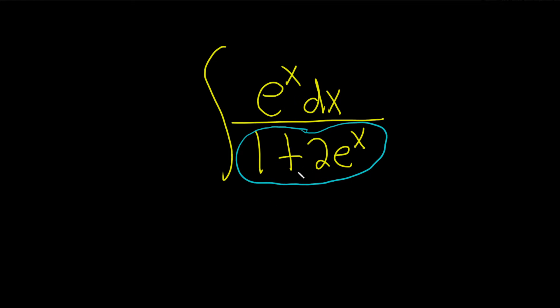Even though you might not see the full solution yet, you see that if you call this piece u, du is going to involve e to the x. So that's a good thing to try. So u will be equal to 1 plus 2 e to the x.